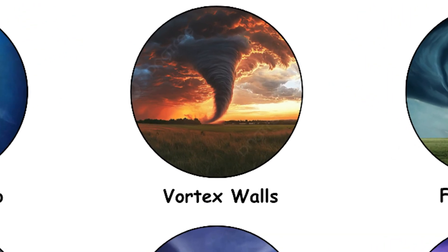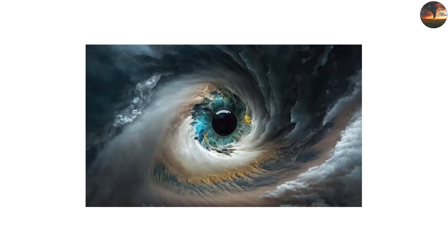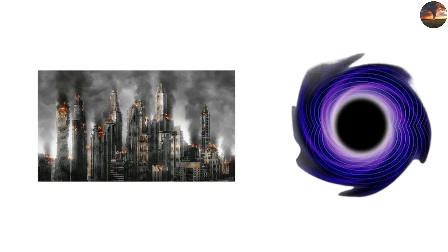The vortex walls, where chaos reigns. If the eye is deceptively calm, then the vortex walls are the very definition of chaos.